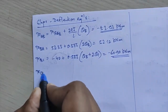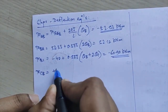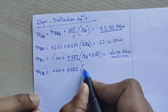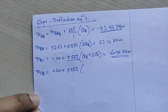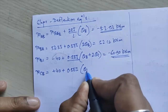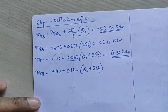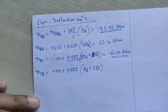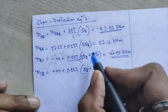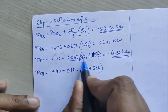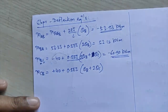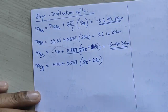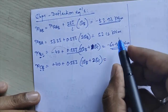MCB = MF_CB + (2EI/L)(2θC + θB) = +40 + 0.5EI×(2θC + θB). Note: C is the near end and B is the far end, so C is multiplied by 2 and B by 1. Substituting theta B and theta C gives MCB = 0.